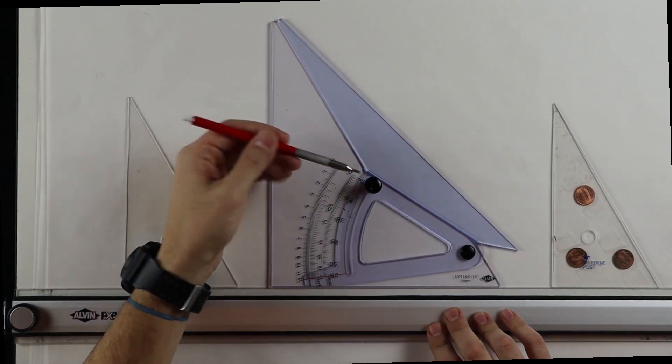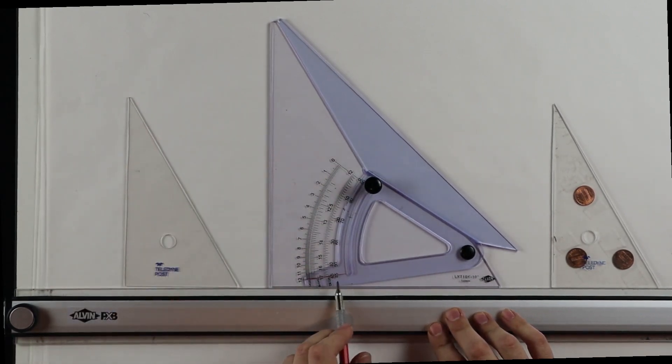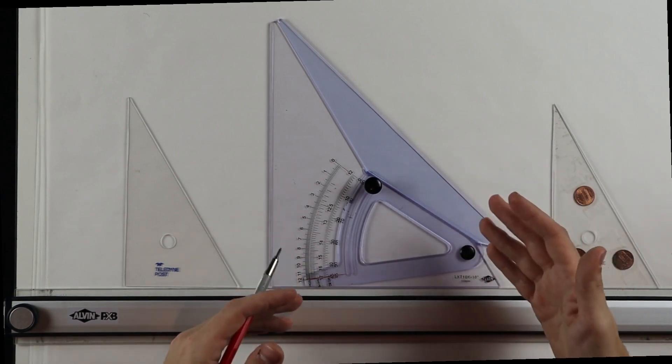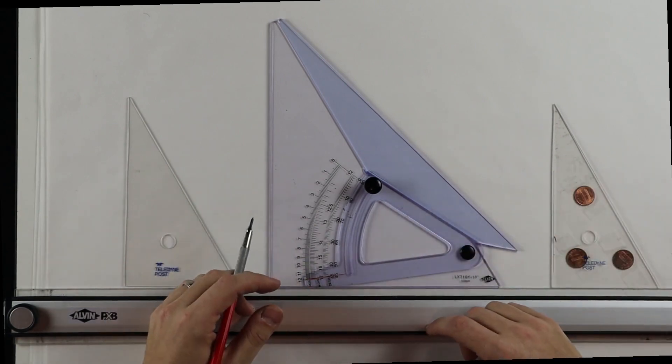But then it also comes with this adjustable knob and this line or gauge, it's a red line that you see here, that can allow you to adjust the angle to get a number of different other types of triangles and angles from it.